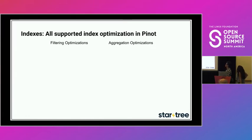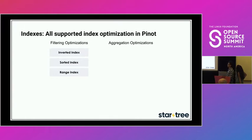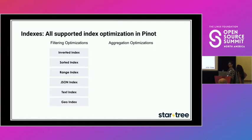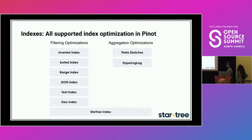Here is the current set of Pinot's supported indexes. We have inverted, sorted, and range indexes designed for normal SQL predicates like equality and inequality. We have JSON and text indexes specifically designed for semi-structured data — so we can ingest data without structuring it first. We have the geo index designed to speed up geospatial operations, such as determining whether a specific lat-long point is within a geo fence. We also have aggregational optimizations like HyperLogLog for approximate distinct aggregations. Finally, the star-tree index sits on top of both categories providing pre-aggregational speedup. In fact, the star-tree index is so powerful, we named our company after it.